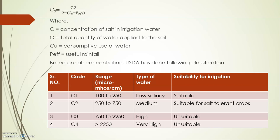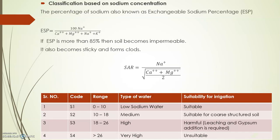Based on salt concentration, the United States Department of Agriculture (USDA) has made a classification. You can see the four types — C1, C2, C3, C4 — depending on the range of electrical conductivity, which varies from 100 up to more than 2250 micromhos/cm. If the range is 100–250, it is low salinity; then medium, high, and very high. Based on this we can determine whether the water is suitable or unsuitable for a given crop.